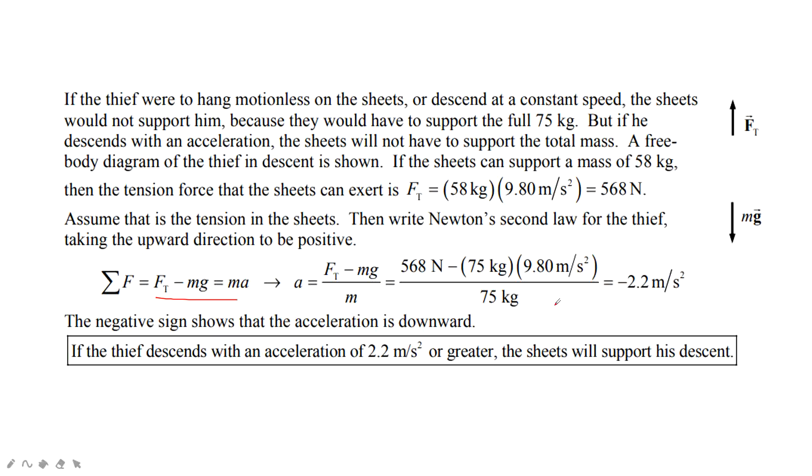This negative sign tells us it is pointing down. So if the thief descends with this acceleration or greater, the sheets will support his descent. Because it can move at the acceleration 2.2 meters per second down. Thank you.